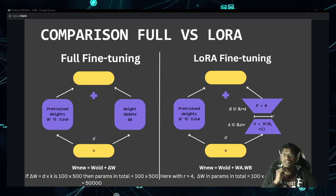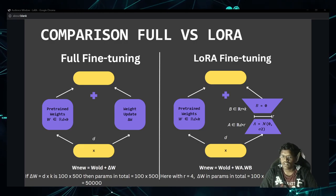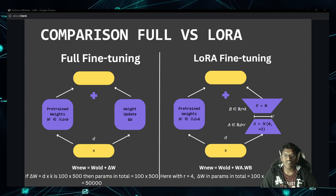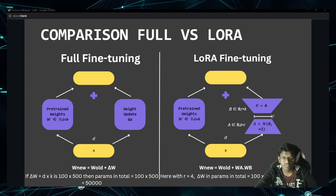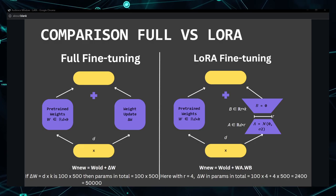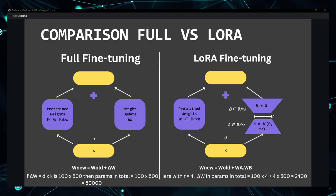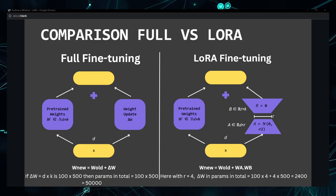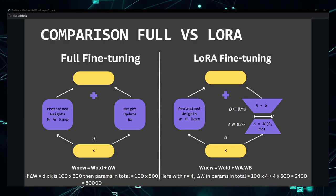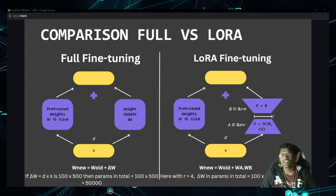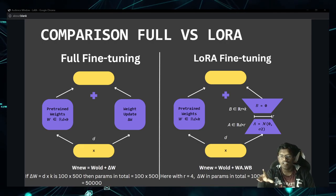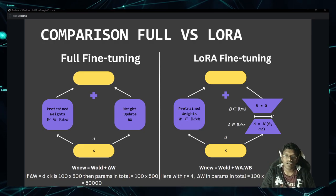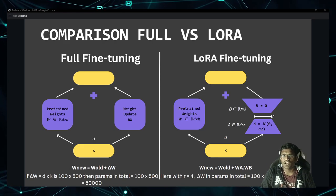If your rank is 4, then matrix A has dimension d×r = 100×4, and matrix B has dimension r×k = 4×500. Total params = 100×4 + 4×500 = 2,400. Compare this to 50,000 — not even 10%! That's how good LoRA is. The weight update delta_W becomes W_A · W_B, which is how the weights are updated in LoRA.